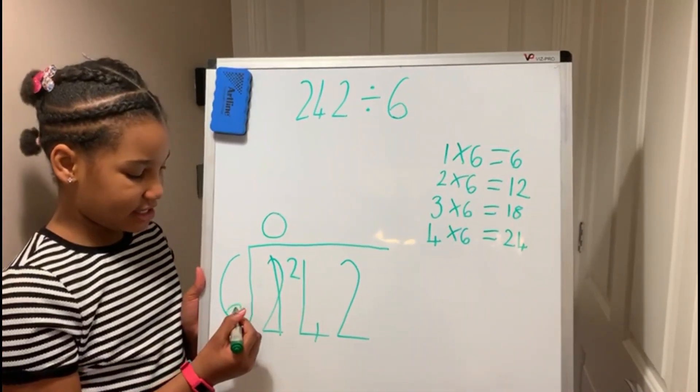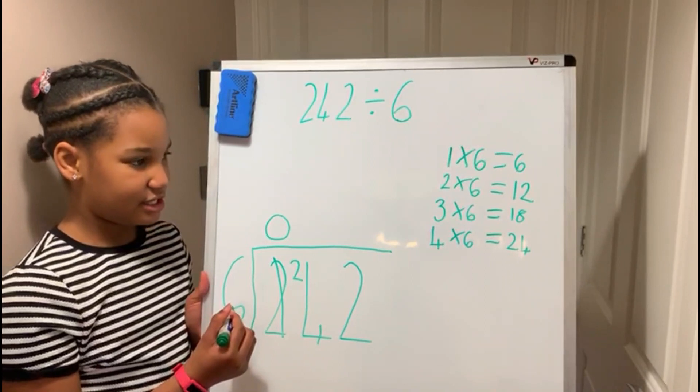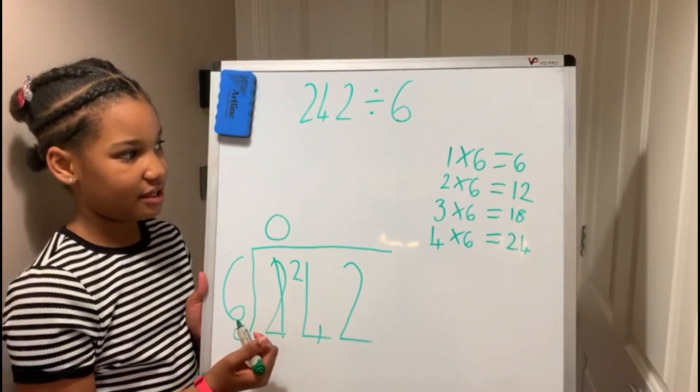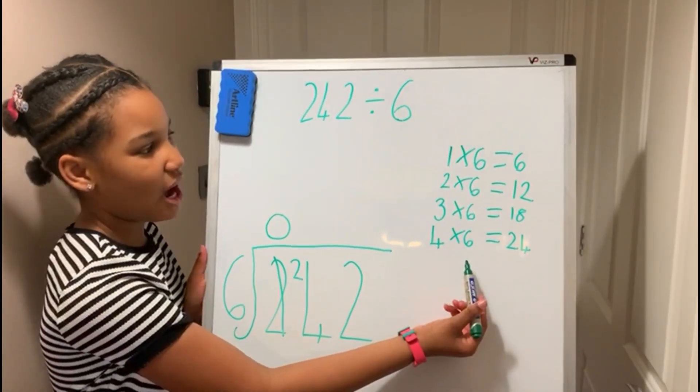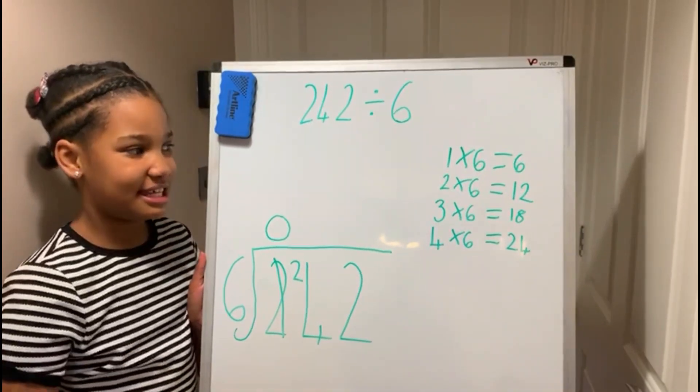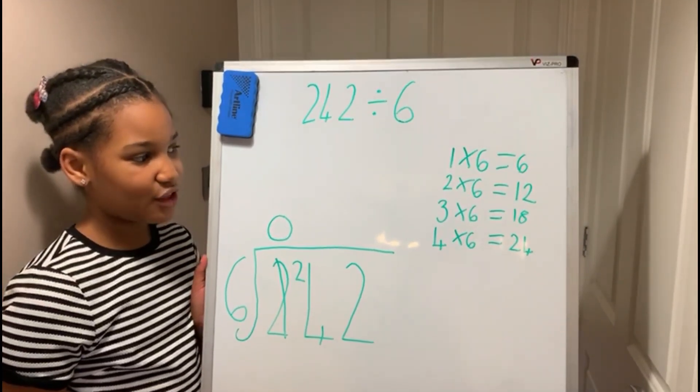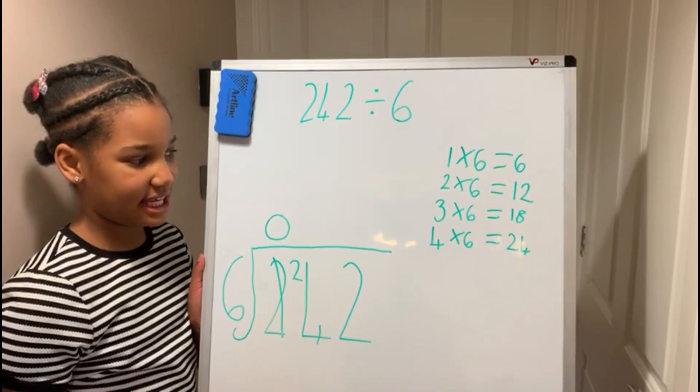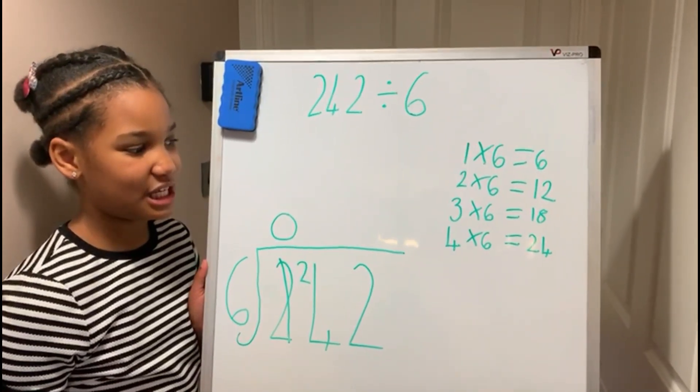How many 6's go into 24? For this you need to use your 6 times tables, and I've already done it here. 1 times 6 is 6, 2 times 6 is 12, 3 times 6 is 18, and 4 times 6 is 24. So you write your 4 here.